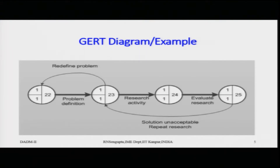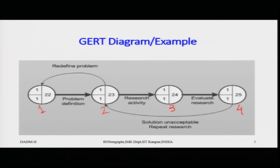Starting from the leftmost node, consider nodes numbered one, two, three, four — though in the overall problem description they might be node twenty-two, twenty-three, twenty-four, twenty-five. There can be other nodes going out from or coming into each of these nodes. We will consider only the network connections and process arrows in which the network is connected.